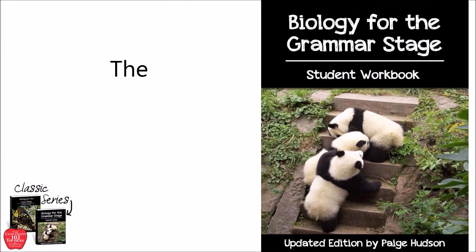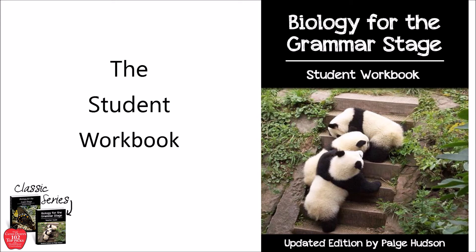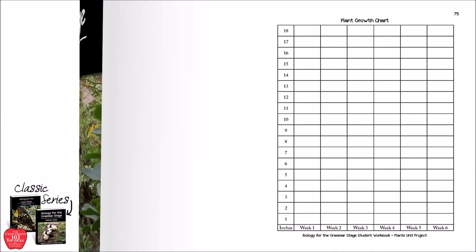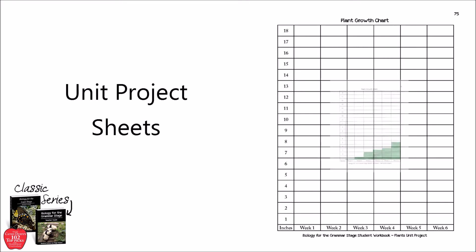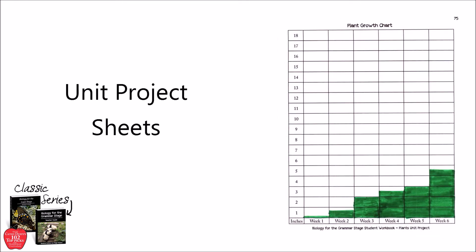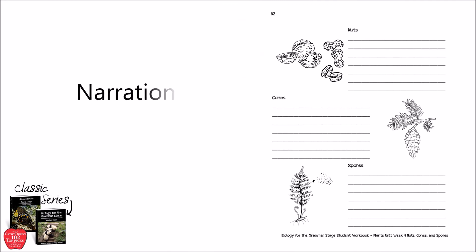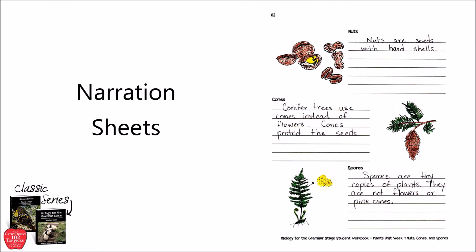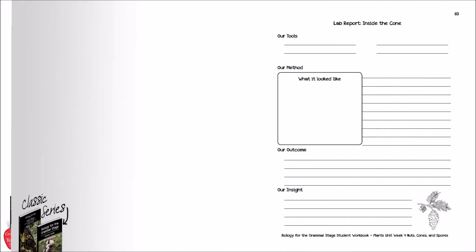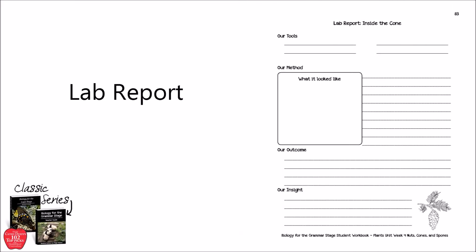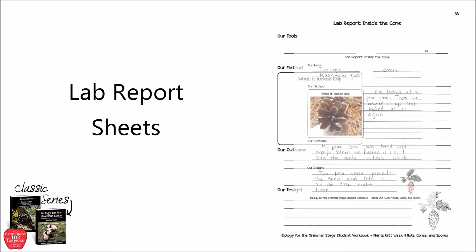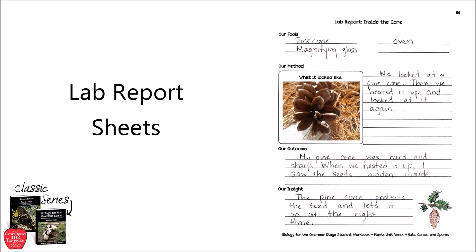Now, let's take a look at the student workbook, which begins with a table of contents for easy reference. Each unit in the student workbook begins with the pages the student can use to complete the unit project. After that, you will find the weekly sheets — one for the student's narration on the topic, and the second one for the week's demonstration. For both these sheets, you can have your student dictate what they want to say or have them write it on their own.